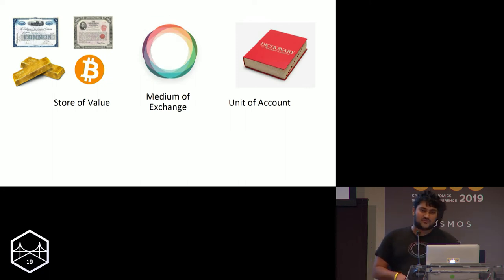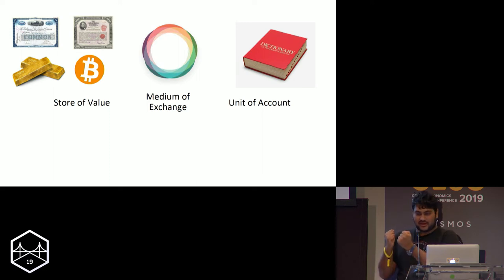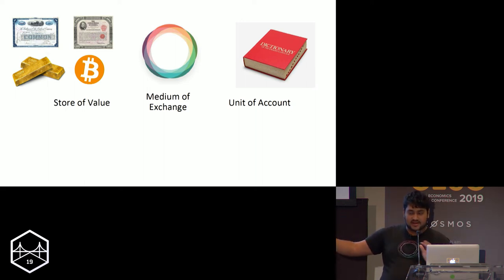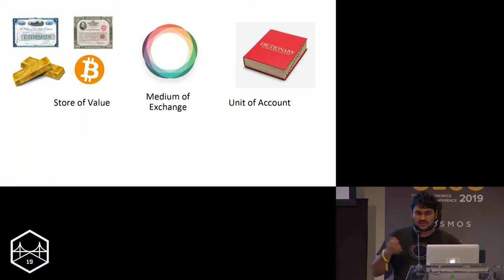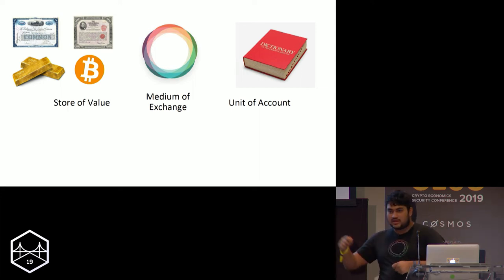In the future, central banks could become institutions whose sole job is to measure the economy and output indices that we can base prices off of. Currently central banks are shackled — they have to maintain price stability by manipulating the supply and demand of standard medium-of-exchange assets. If they're removed from that requirement and can just focus on outputting dictionary indices of units of account, it might be much easier. They'd become more like the institution in France that defines what a kilogram is — just measuring real GDP, velocity, and all this stuff and outputting prices for the economy.